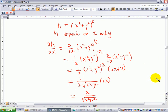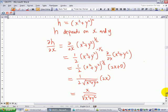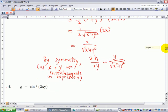Similarly, you can find ∂h/∂y. It is not necessary to compute all over again because the roles of x and y are interchangeable. So you change the x to y and y to x, and the expression still remains the same. Therefore, by symmetry, you can find that ∂h/∂y is just equal to y/√(x² + y²) as you interchange x and y.